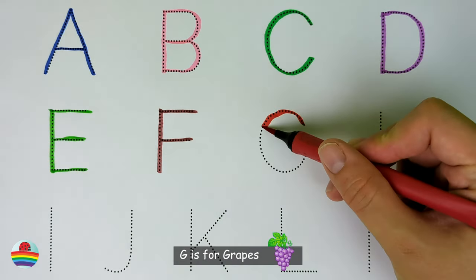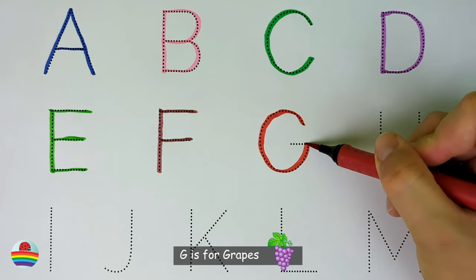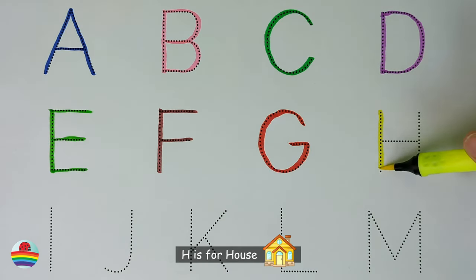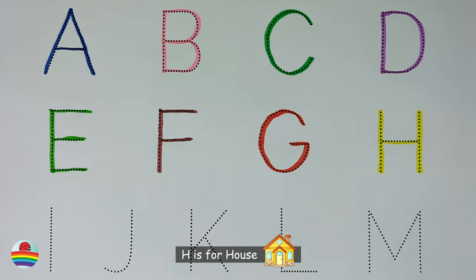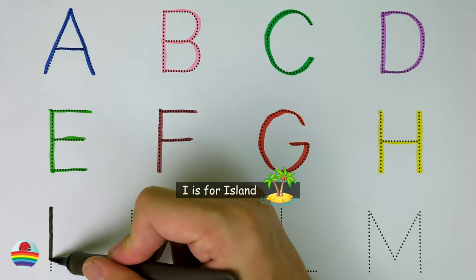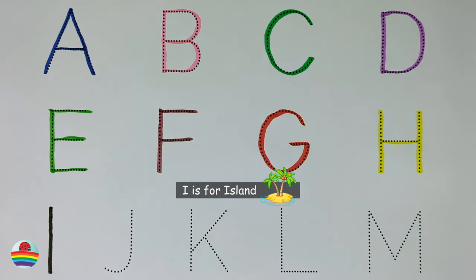G. G is for grapes. G. H. H is for house. H. I. I is for island. I.